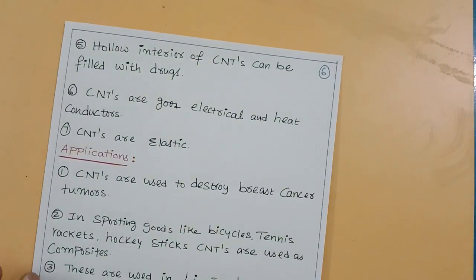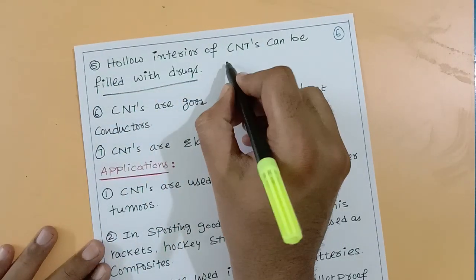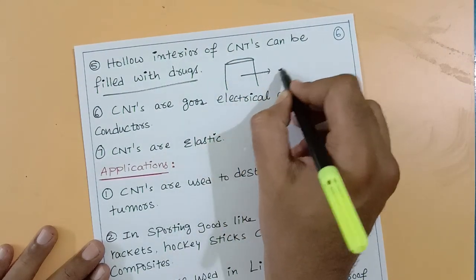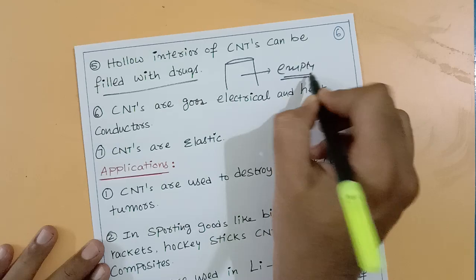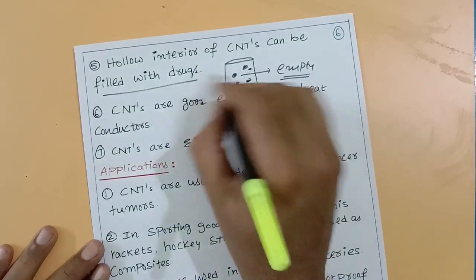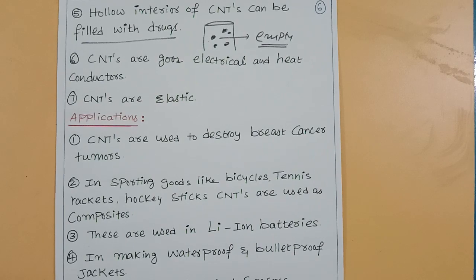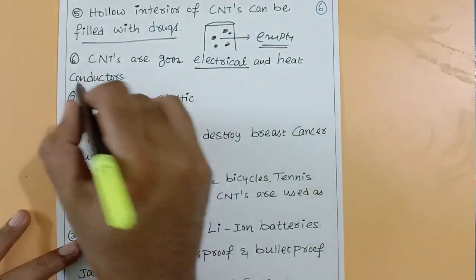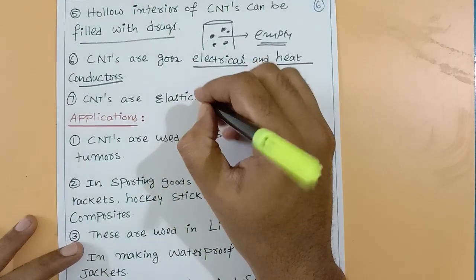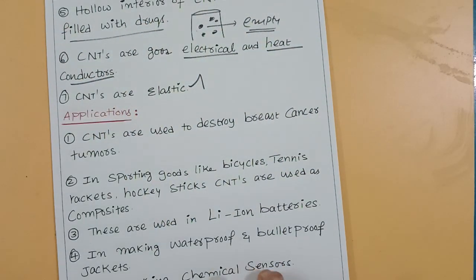Carbon nanotubes are chemically stable and corrosion resistant. The hollow interior of carbon nanotubes can be filled with drugs — the inner hollow space can hold molecules such as drug compounds for delivery to a patient. Carbon nanotubes are also good electrical and heat conductors, and they are elastic — you can stretch and bend them.